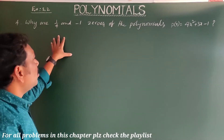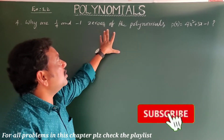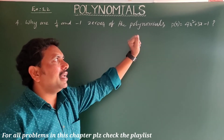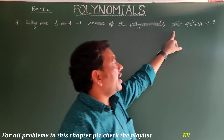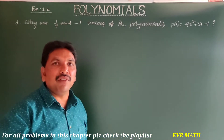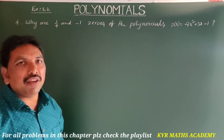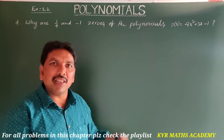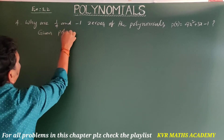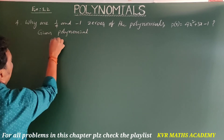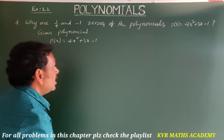Next, question four in Exercise 3.2 — the final question in this exercise. We need to verify why 1/4 and -1 are zeros of the polynomial p(x) = 4x² + 3x - 1. To verify, substitute x = 1/4 and x = -1 into p(x). If we get 0, they are zeros; otherwise, they are not.